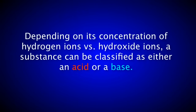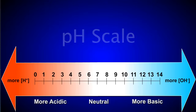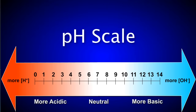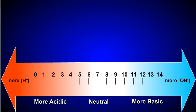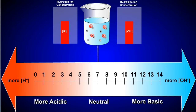Depending on its concentration of hydrogen ions versus hydroxide ions, a substance can be classified as either an acid or a base. The pH scale measures how acidic or how basic a substance is. It ranges from 0 to 14, with 7 being neutral. When a substance has a pH of 7, like water does, it releases an equal concentration of hydrogen and hydroxide ions.